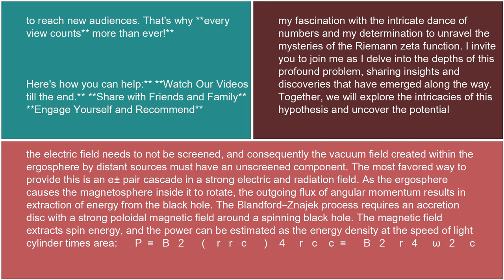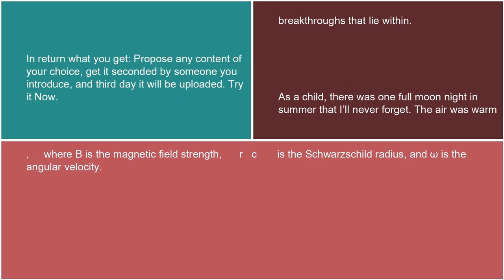The Blandford-Znajek process requires an accretion disk with a strong poloidal magnetic field around a spinning black hole. The magnetic field extracts spin energy, and the power can be estimated as the energy density at the speed of light cylinder times area: P = B² r_s² Ω², where B is the magnetic field strength, r_s is the Schwarzschild radius, and Ω is the angular velocity.